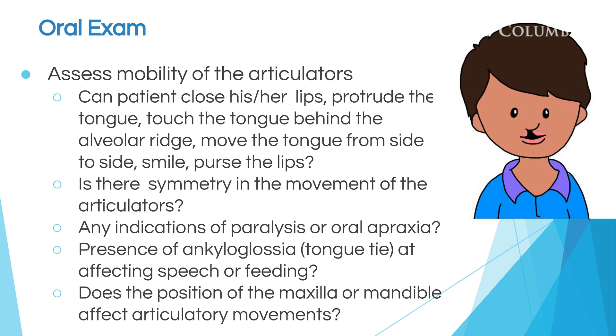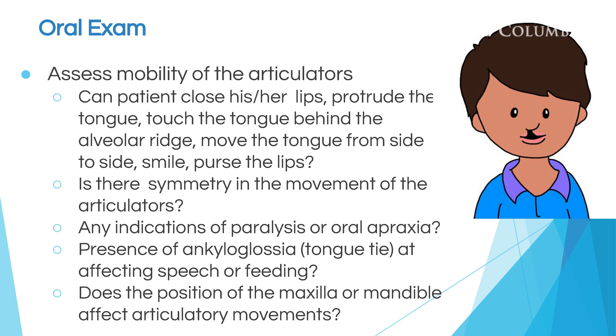Then you'll look at their tongue. Can they move their tongue from side to side? Can their tongue touch the alveolar ridge? They should be able to do all these things in order to produce certain sounds. Also, when having them make these movements, check to see their symmetry. When they retract their lips, does one side droop or is one side tighter than the other? Or when they move their tongue from side to side, can they move it towards one side more than the other? That may be an indicator of paralysis, and that would affect production of certain sounds.